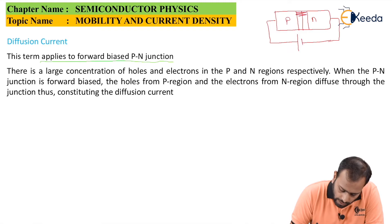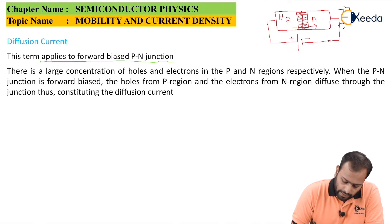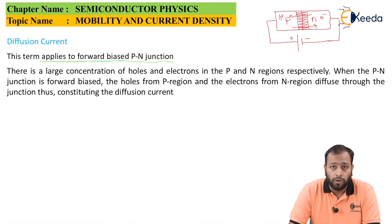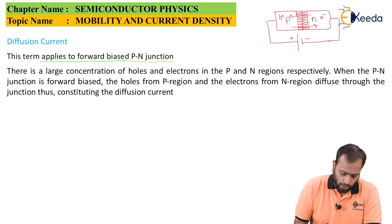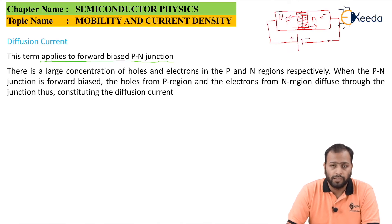When a positive voltage is applied to the P terminal and negative to the N terminal, the positive terminal pushes holes from the P side towards the N side, while the negative terminal pushes electrons from the N side towards the P side. This effectively minimizes the depletion region. That is why it is called diffusion current — the electrons and holes diffuse into one another through the junction when the P-N junction is forward biased.